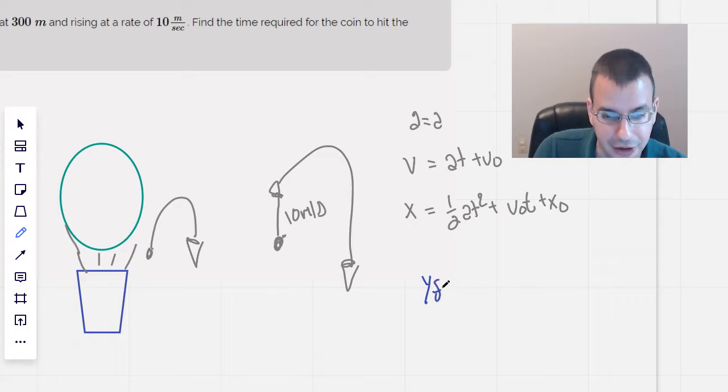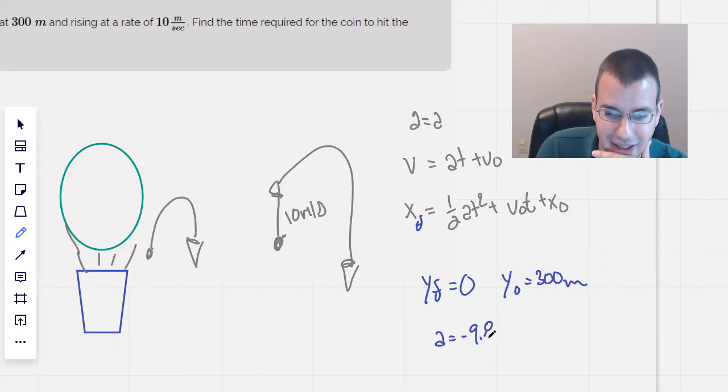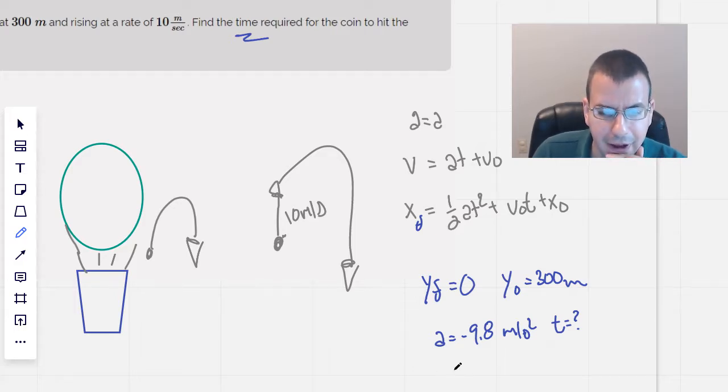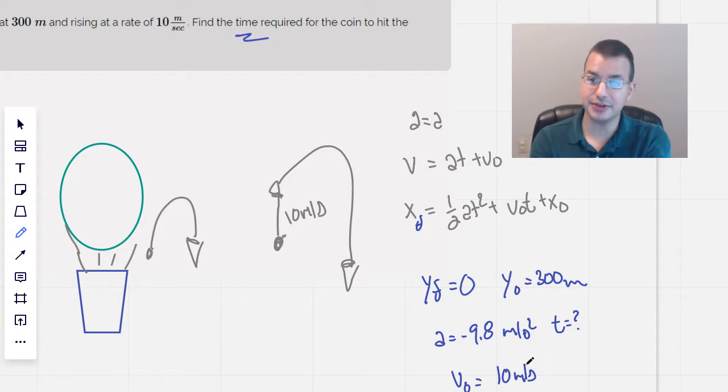Y final, so this is the final over here, will be zero on the ground. Y initial will be 300 meters. Acceleration, I'm going to say negative 9.8 meters per second squared. t equals question mark because that's what we're trying to find. Time required. I think we're going to get quadratic. An initial velocity equals 10 meters per second.